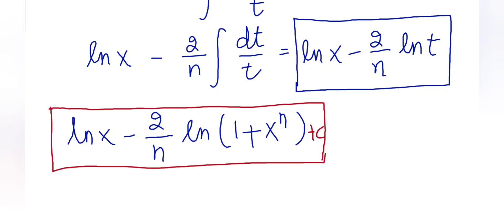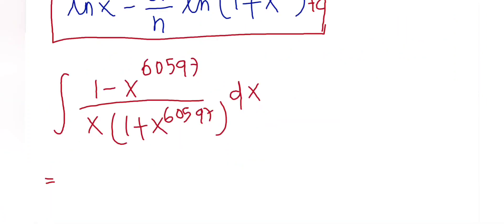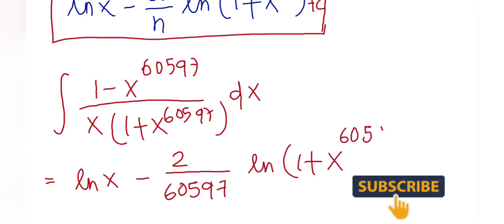One thing I left out is I have to add the constant, plus C. So the final answer is: ln(x) - (2/60597)ln(1 + x^60597) + C. Thank you for watching, we'll see you next time!